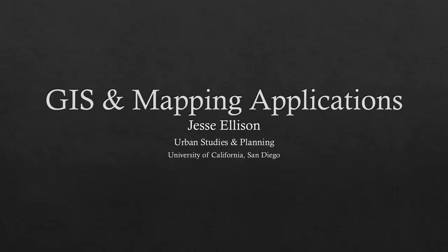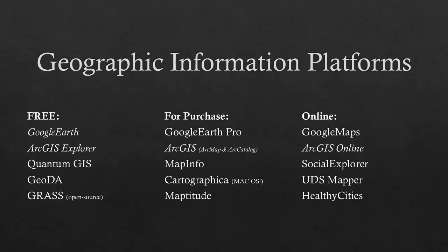You'll see in italics the programs or applications that we'll primarily be working with. When I say 'platforms,' I'm referring to anything that has to do with geographic information — it could be a software program, an online map service, or a simple application you use on your smartphone. This is what I mean when I refer to geographic information platforms.